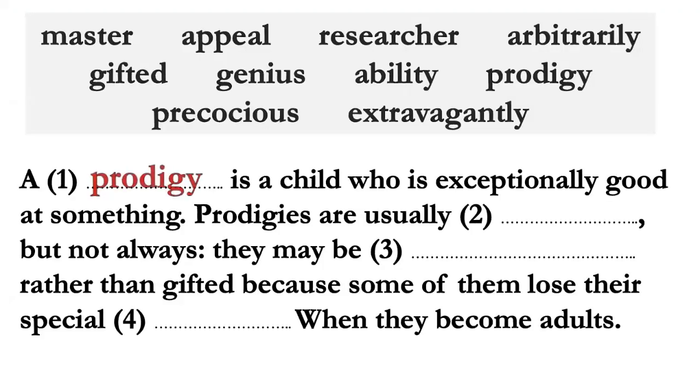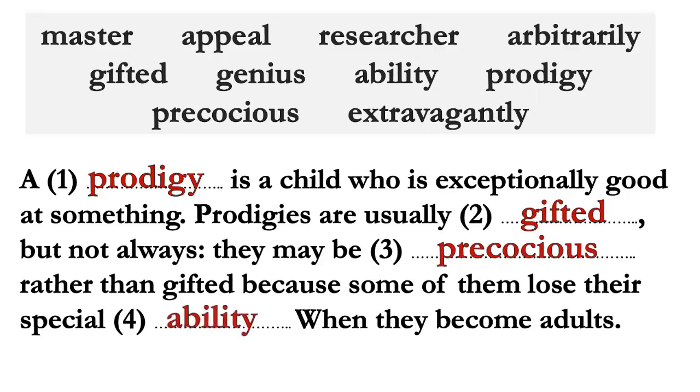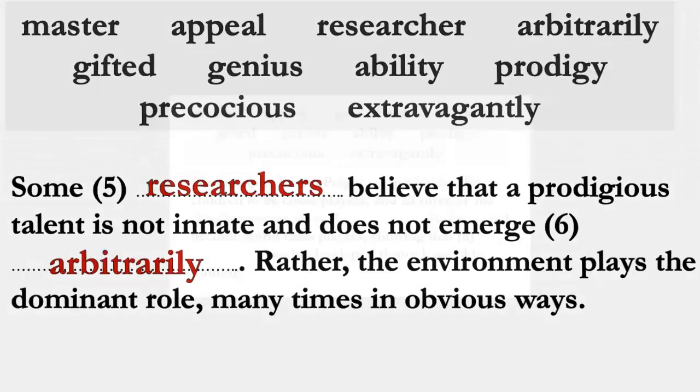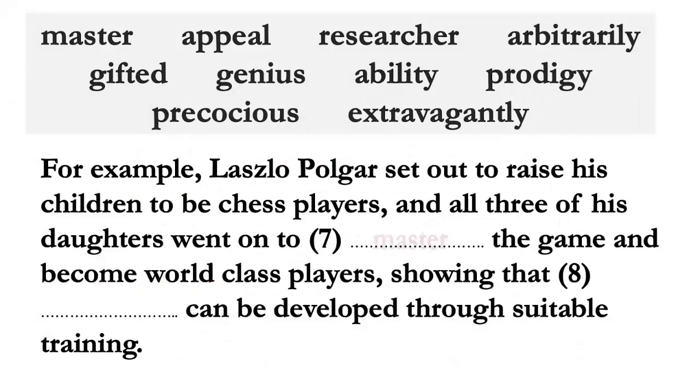Number one, it would be prodigy. Two, gifted. Three, precocious. Four, ability. Five, researcher. Six, arbitrary. Seven, master. Eight, genius.